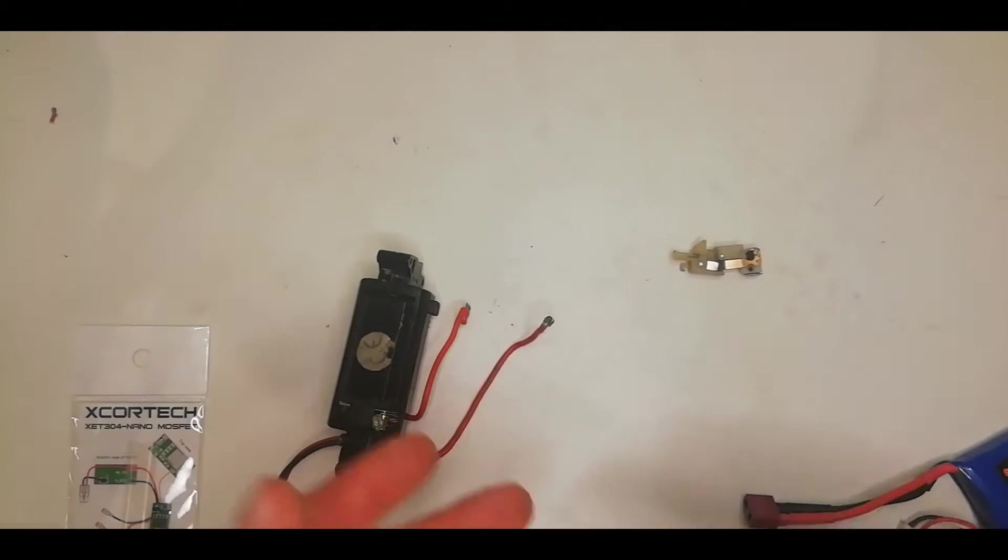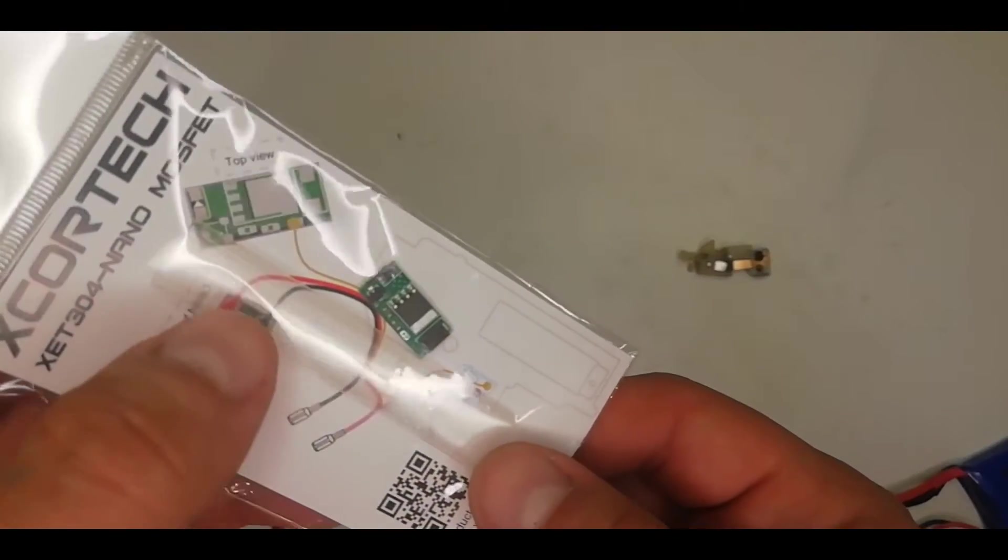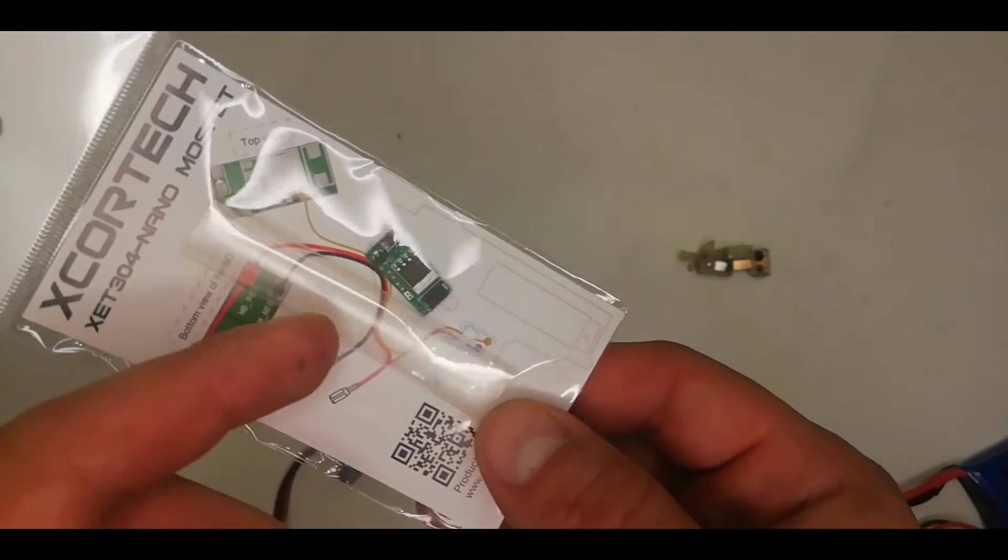Now it's worth pointing out during this test that the motor is under no load right now. When you're pulling back a big spring or spinning the gearbox around, you're going to get a lot more current draw. And over time that sparking is going to wear down your contacts, cause pitting, carbon buildup and eventually your contacts are going to fail.